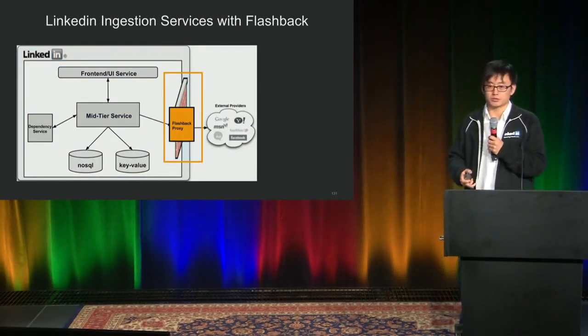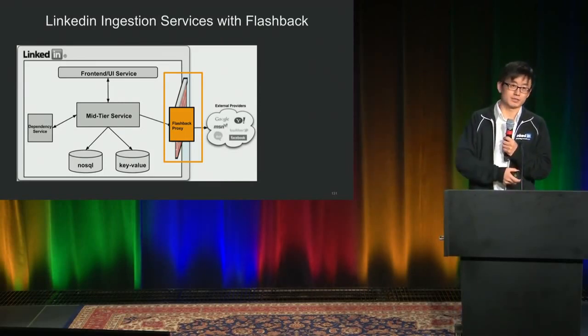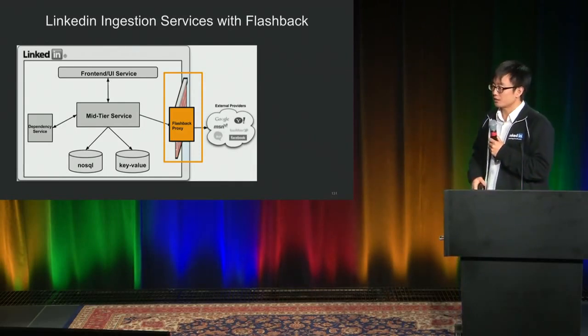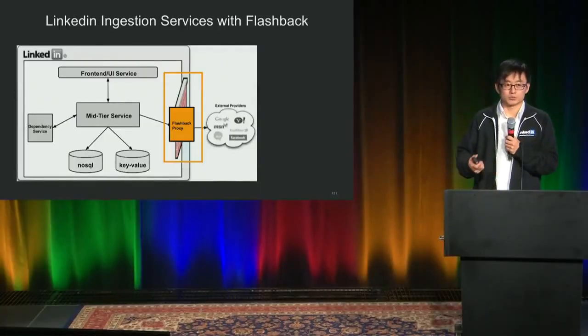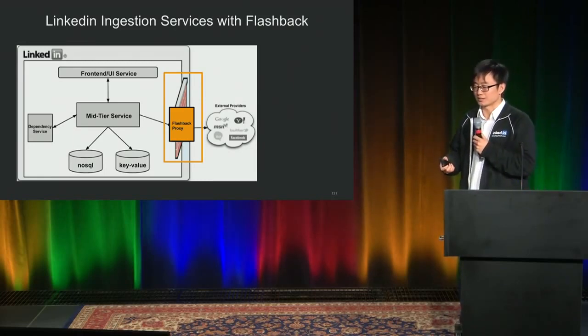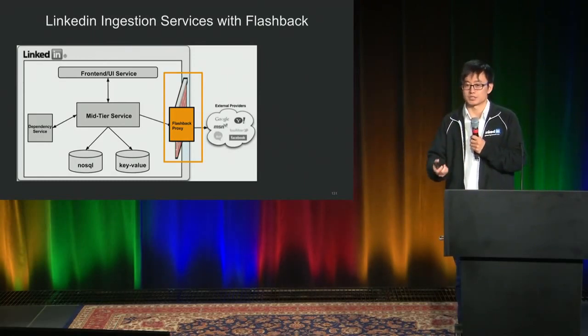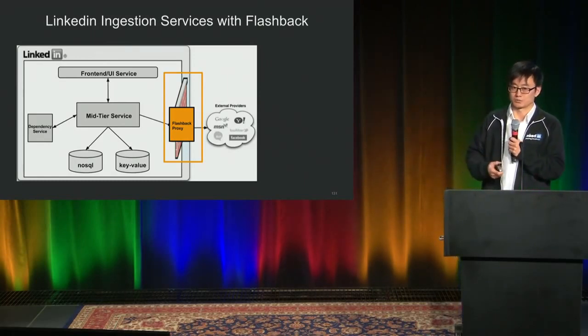Flashback acts as a proxy, handles HTTP and HTTPS traffic, intercepts requests and responses, and stores them. It is controlled by the test framework so you can record or replay. You can also change the mock data on the fly from a test case using the API, or manipulate the response to test different variations and negative cases for your service. Basically, you have full control over what gets mocked on the network.